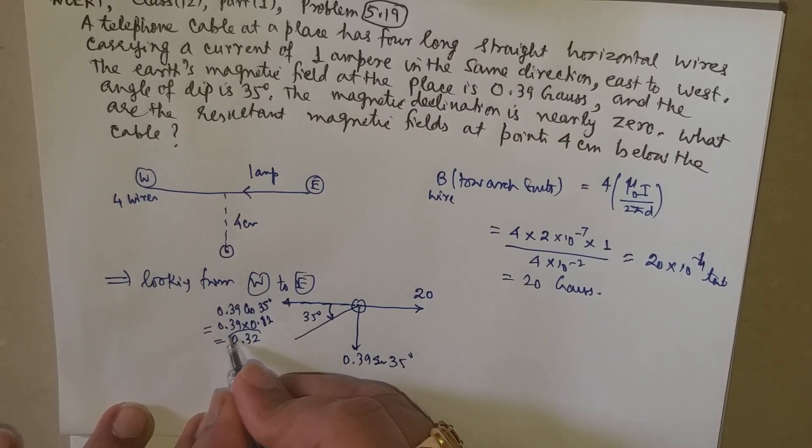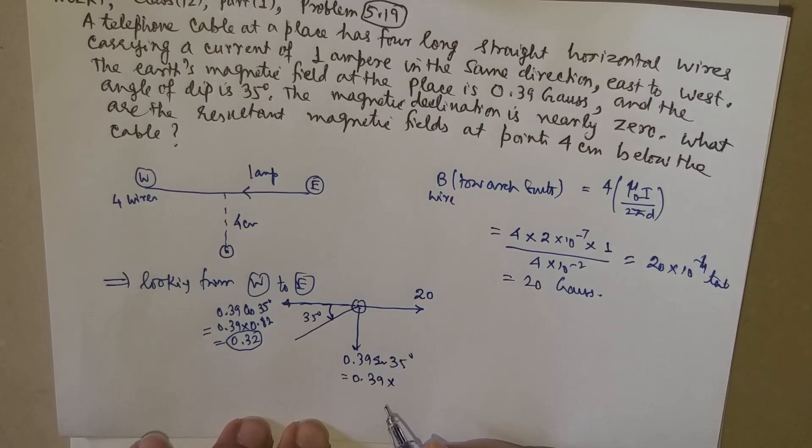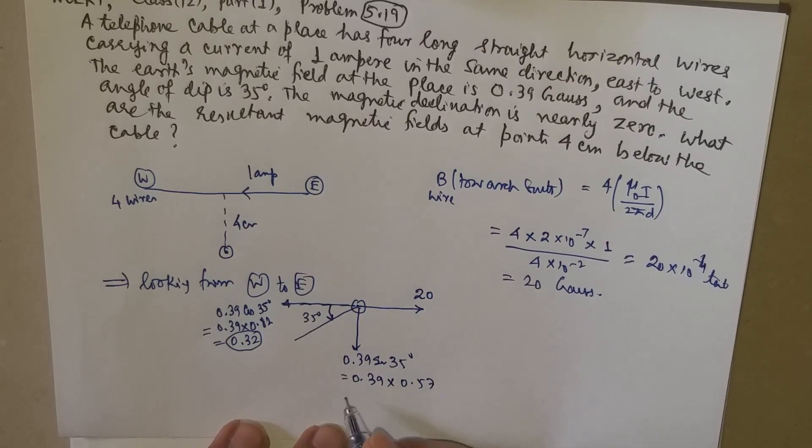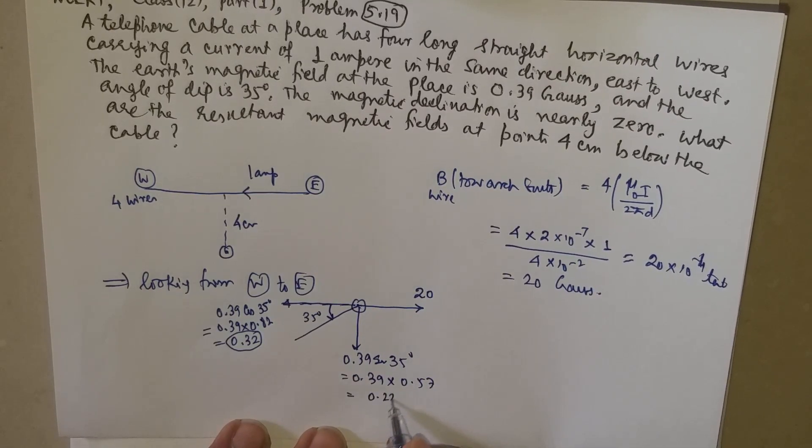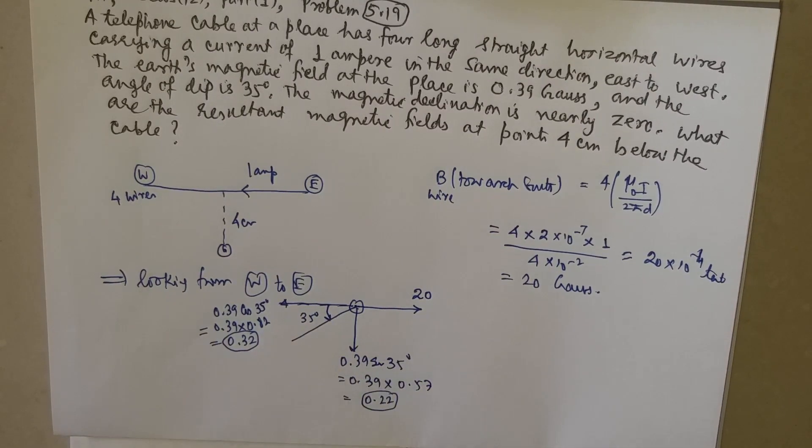We are taking cos 35° as 0.82, so it will be 0.39 × 0.82, which is around 0.32 gauss. And sine 35° we are taking as 0.57, so we get 0.22. Now the resultant of 0.22 and 0.32.